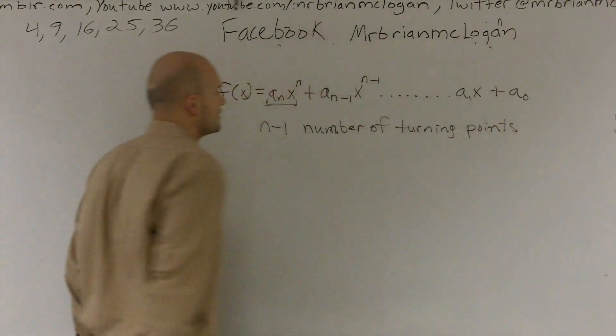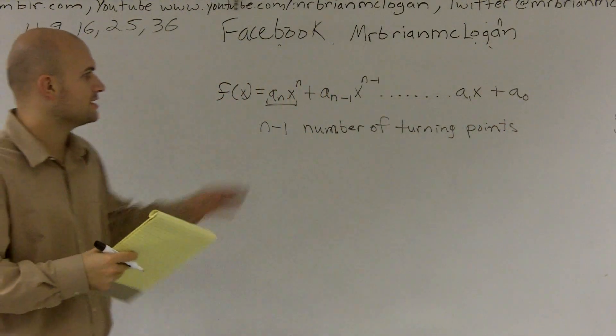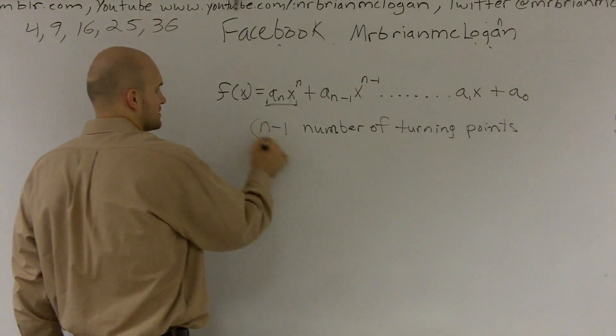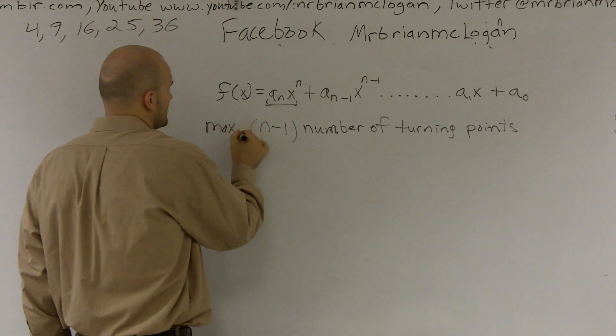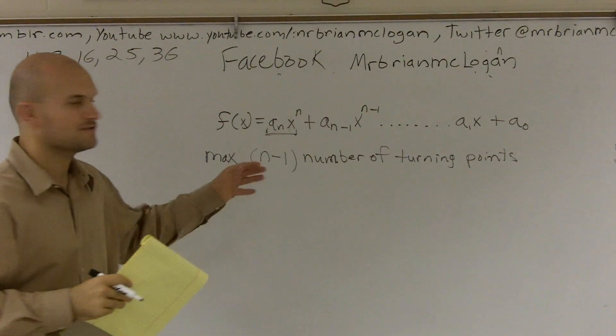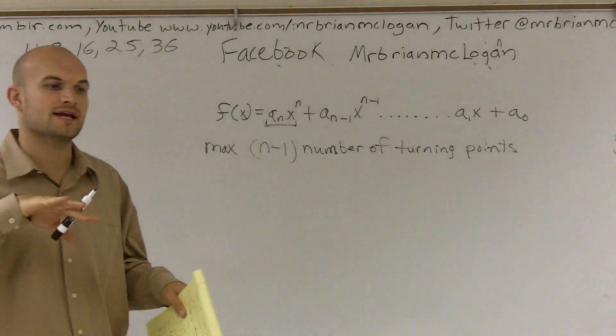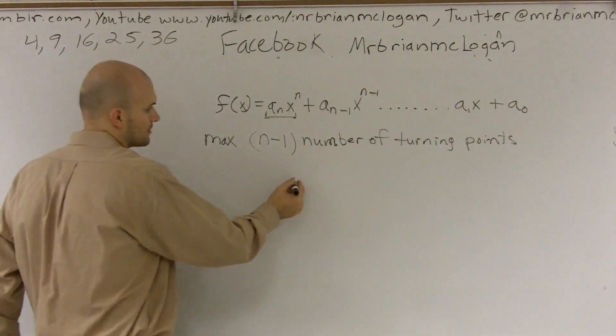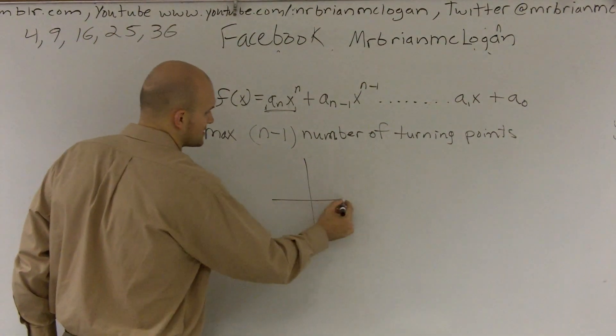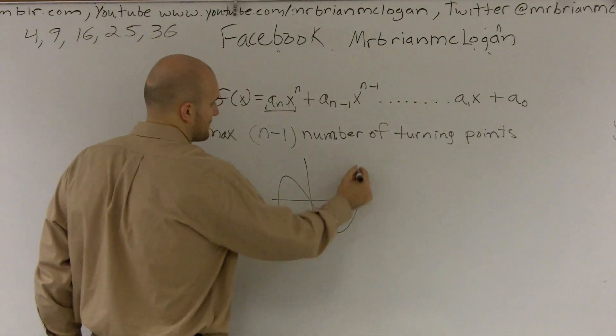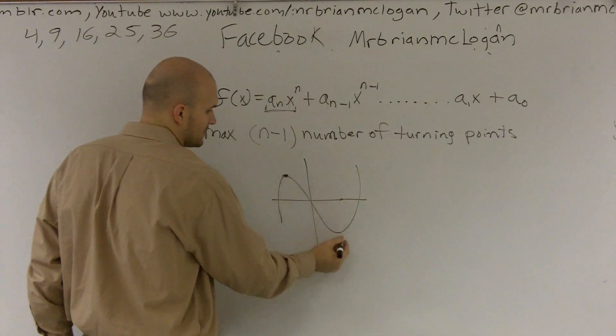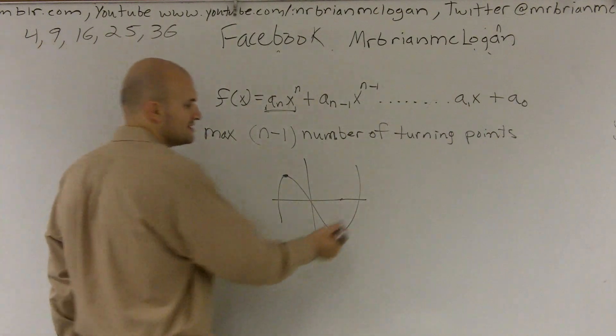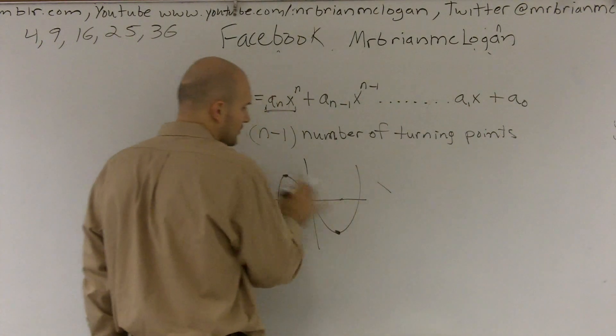First of all, n minus 1 is the maximum number of turning points. So this is the maximum number of turning points. And remember, a turning point is when a graph changes from increasing to decreasing. So, if I was just going to draw like a sketch or something, okay, we have a turning point here, and we have a turning point here.